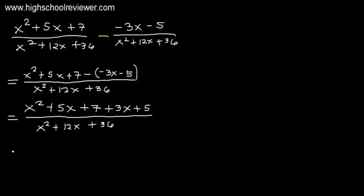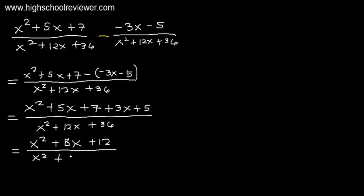We are going to combine like terms. x squared is only one term, so we write x squared. Then positive 5x plus positive 3x gives us positive 8x. And positive 7 plus positive 5 gives us positive 12. All over the denominator x squared plus 12x plus 36.